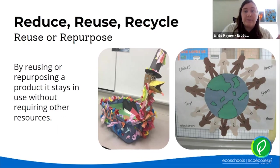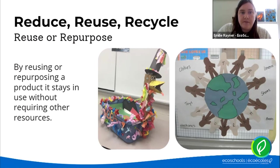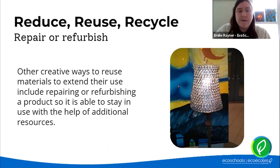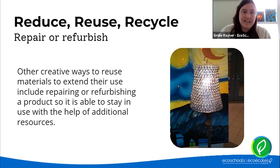By reusing or repurposing a product, it stays in the economy without requiring other resources. Here you can see an example of EcoSchools in action — including a goose bin, where GOOSE stands for Good On One Side, and a poster used for an items drive. By repairing or refurbishing, a product is able to stay in use with the help of additional resources. Here you can see a clever example of refurbishing using pop can waste to create a lampshade.